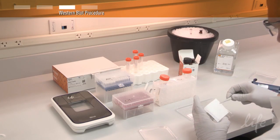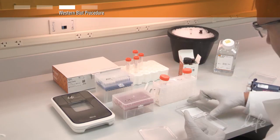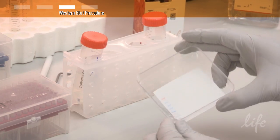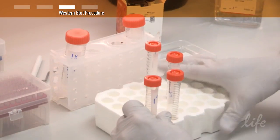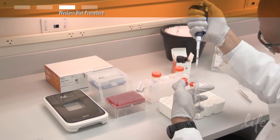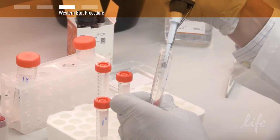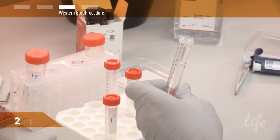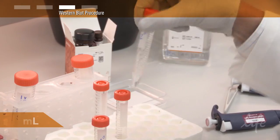To prepare the run, immerse your blotted membrane in 5 milliliters of the 1X iBind solution. Next, dilute your antibodies with the 1X iBind solution according to the protocol recommendations to a total volume of 2 milliliters for both the primary and secondary antibodies.